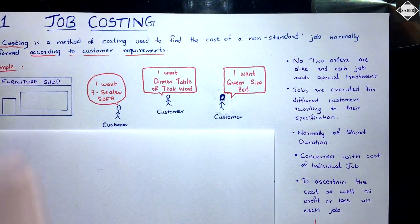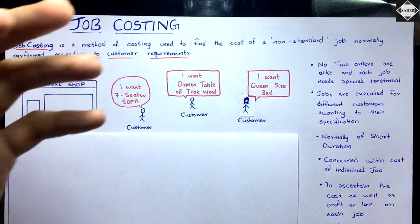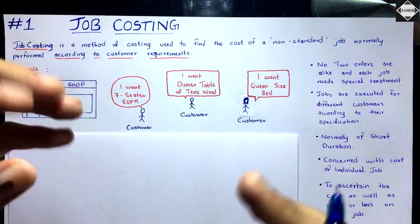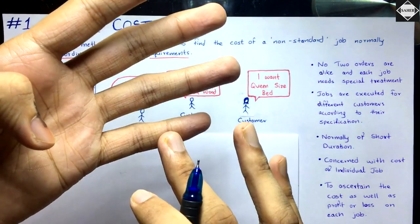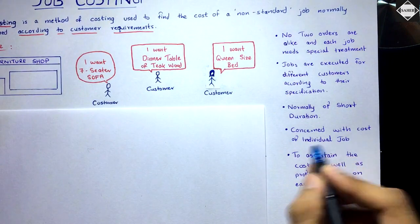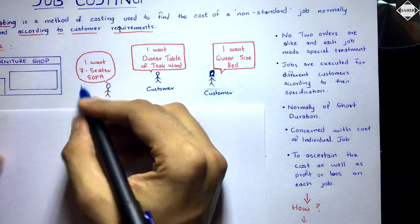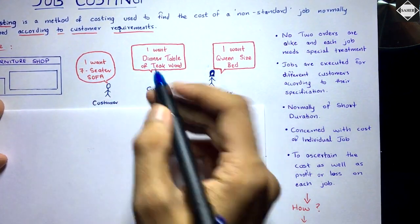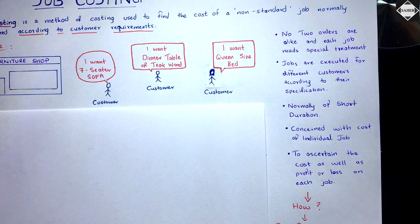Let's take another example: a boutique shop where wedding dresses are stitched. Each bride's body size and choice is different — the design, color, fabric, and materials will all differ for every customer. So the prices will also be different. It's concerned with the cost of individual jobs, and you charge different rates to each customer, unlike unit costing where rates are fixed.